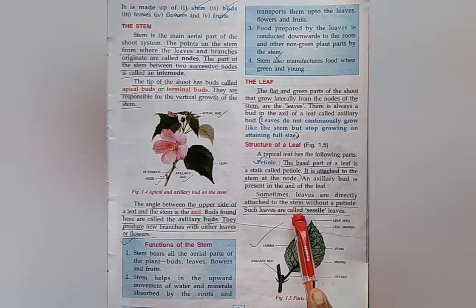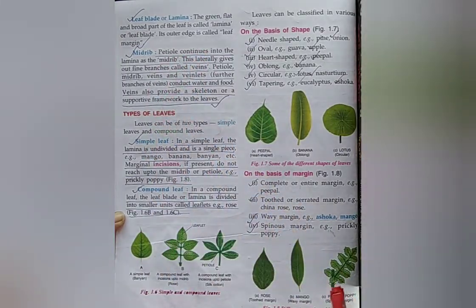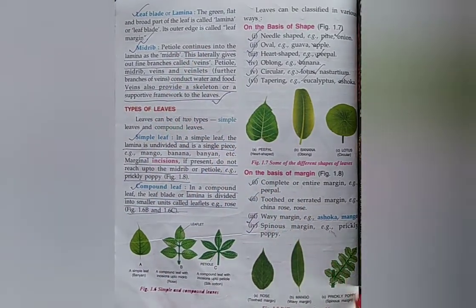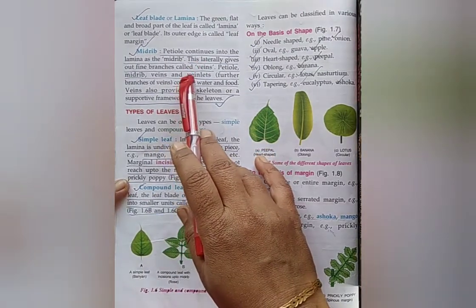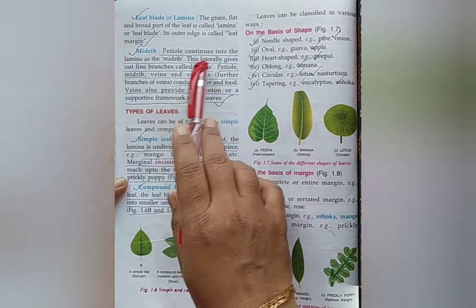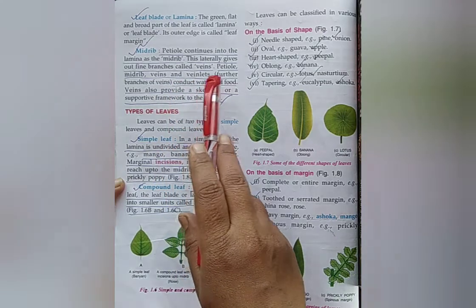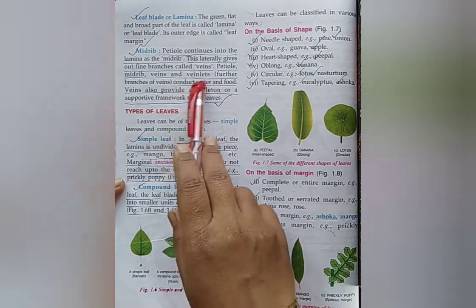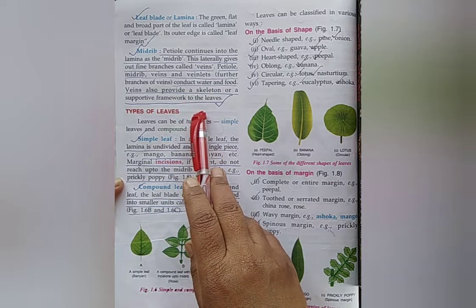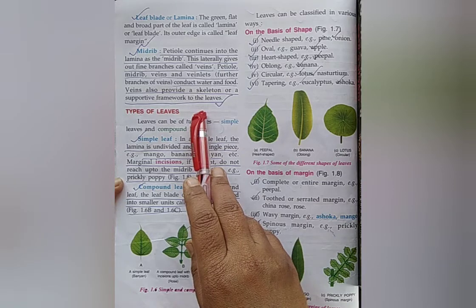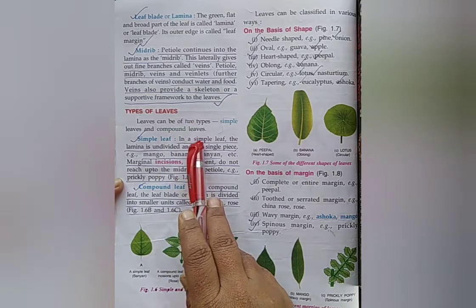What is leaf blade or lamina? The green, flat, and broad part of the leaf is called leaf blade or lamina. What is leaf margin? The outer edge of a leaf is called leaf margin. What is midrib? Petiole continues into the lamina as the midrib. Which are called veins? Midrib laterally gives out fine branches called veins. Veins also provide a skeleton or a supportive framework to the leaves.